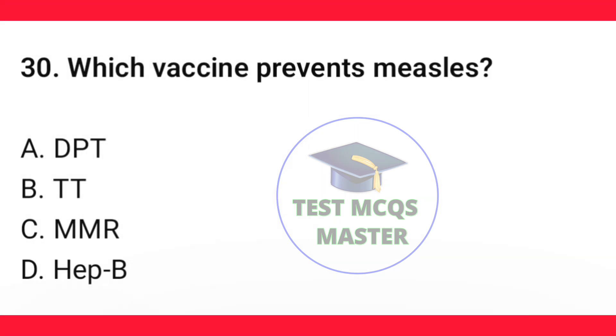Question number 30. Which vaccine prevents measles? The correct option is C — MMR.